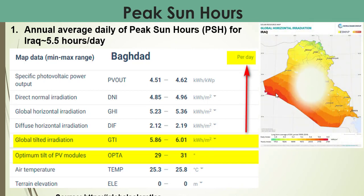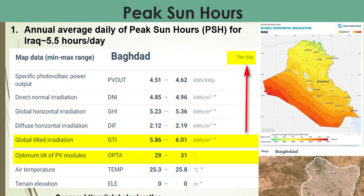We focus on the global horizontal radiation from the World One Group map. The legend represents the daily peak sun hours, ranging from 4.8 to 6 kilowatt hours per meter square. These values divided by one kilowatt per meter square are equivalent to peak sun hours. For the selected area of Baghdad city, the capital of Iraq, this is the boundary shown on the map.